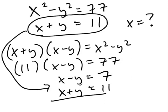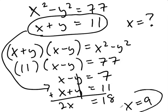Now we want to get rid of the y because we're solving for x. So we can just add these two expressions. x plus x equals 2x, y plus negative y is 0 so that cancels out, and then 7 plus 11 is 18. 2x equals 18, x equals 9. So there's our answer.